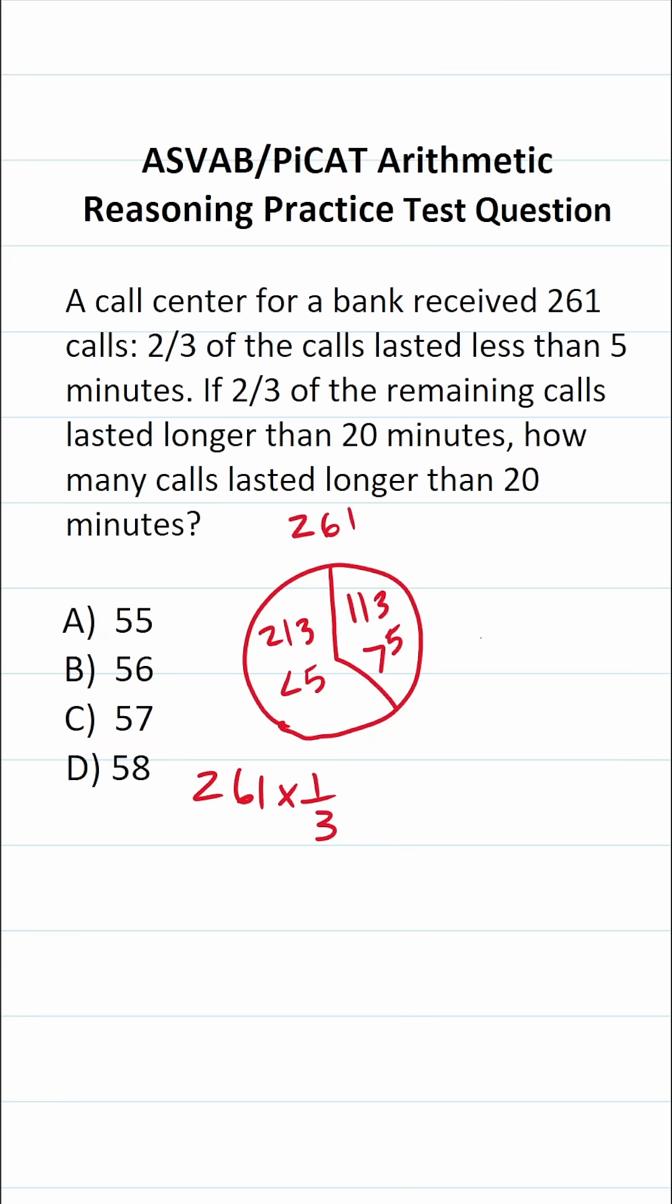I could write 261 as a fraction by placing it over one, and this enables me to cross-reduce. I happen to know that the sum of the digits in 261 is divisible by three. Therefore, I know 261 is divisible by three. So let's go ahead and do that.